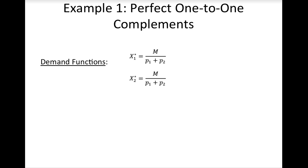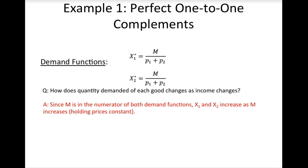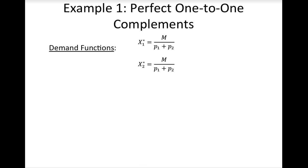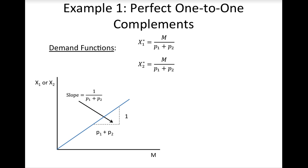Let's start our comparative static analysis with how demand for goods that are perfect one-to-one complements changes as income changes. From a simple examination of the functions, we can see that as income increases, the amounts of goods 1 and 2 that the consumer will buy will also increase, since income is in the numerator of both demand functions. We can also take the partial derivative of the demand functions with respect to income. Since the partial derivatives are always positive, we say that goods 1 and 2 are normal goods.